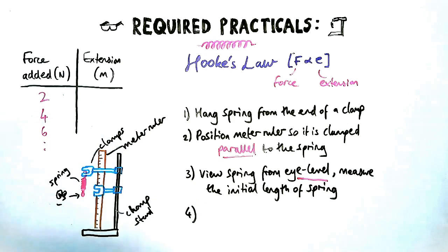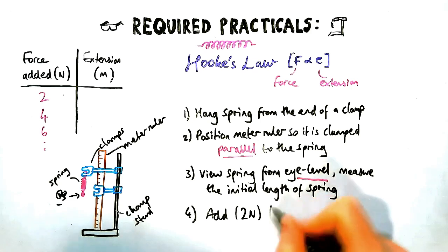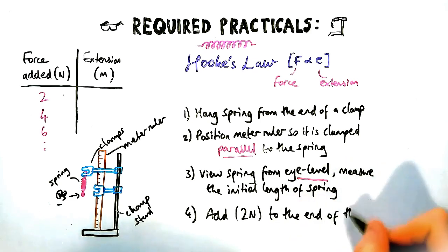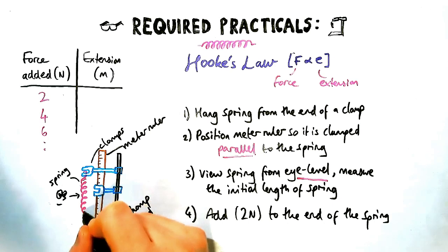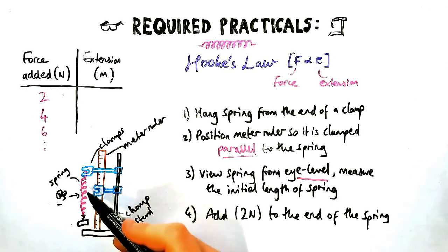Okay, now depending on what results table you are given in a practical, you will want to mention that next. So let's say you were told to go up in two newtons, you'd say add two newtons to the end of the spring, or one newton or five kilograms or whatever it is.